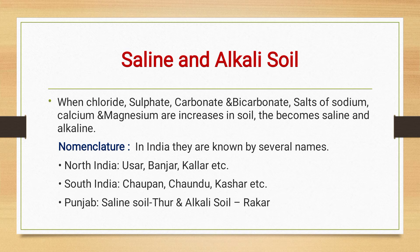In South India, the saline soil is also called chopan, chandu, and kassar. In the case of Punjab, saline soil is also called saline soil, and the alkaline soil is called rakar. These are the different names by which saline soil is known in different parts of India.